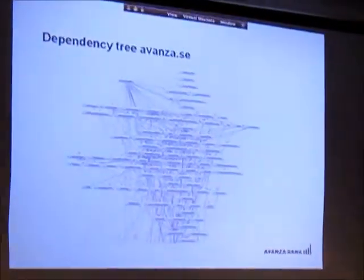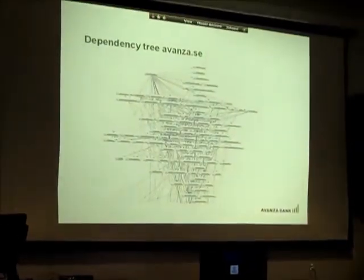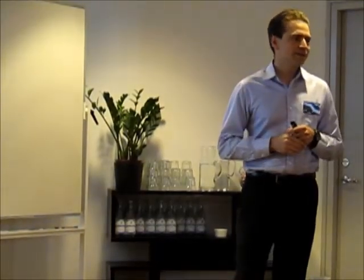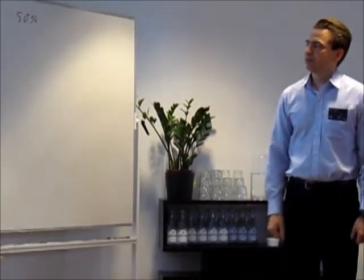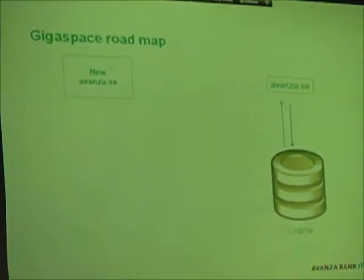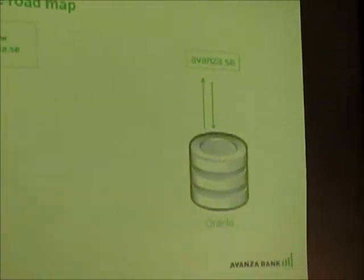If we look at the system we have today — this is the actual dependency tree of the Avanzar.se service, the dependency tree of the web container running on today's service. On the right-hand side we have the system today: the websites, the big database, and some distributed caching. It's straightforward, and it's read-mostly so it's kind of easy. But the new service would have lots more writes to the database.